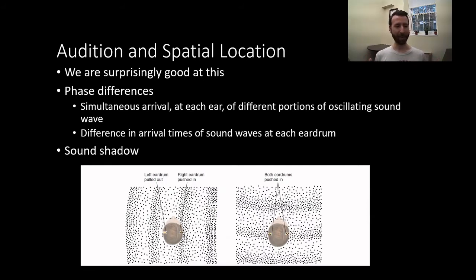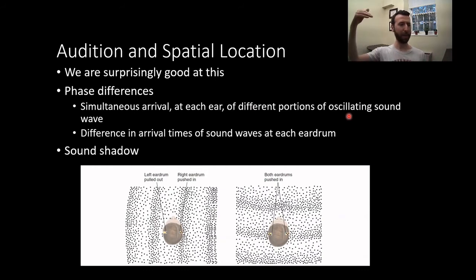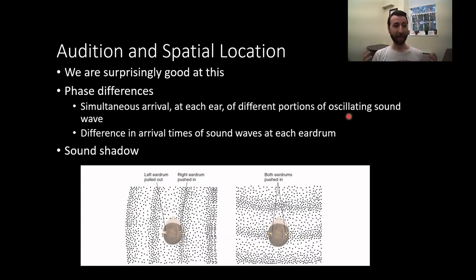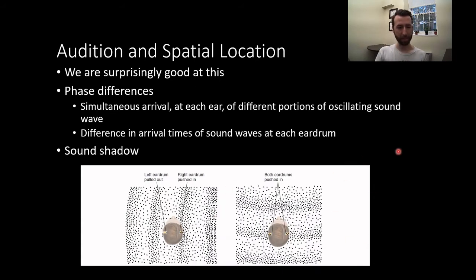Here's how that works. Your ears are not close together — you have one on each side of your head — and this gives us a couple of cool things. There's a phase difference: simultaneous arrival at each ear of different portions of an oscillating sound wave. Because your ears are not in exactly the same location, that sound wave is going to hit both of them at a different point in its phase — maybe at a peak on one side and in a valley on the other. That slight phase difference as the waveform hits two different points on your head can give you information about how far away something is.